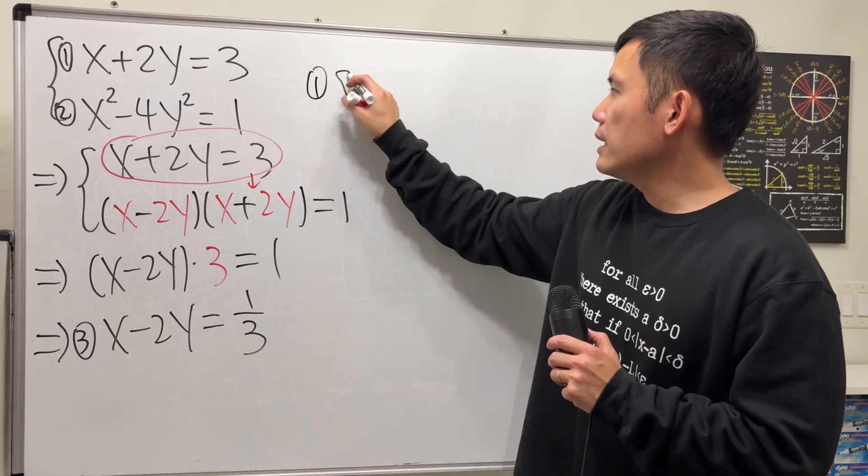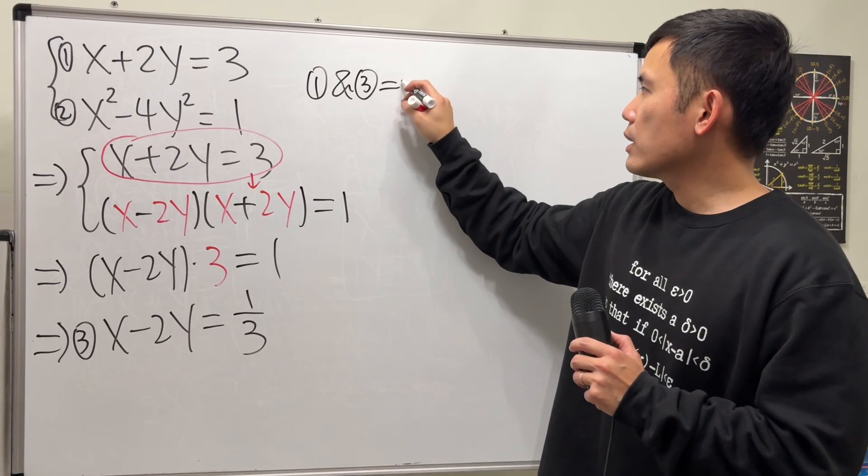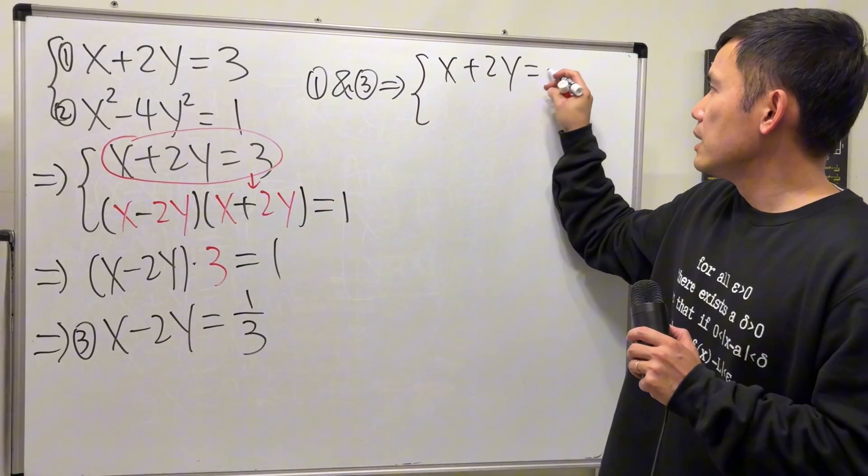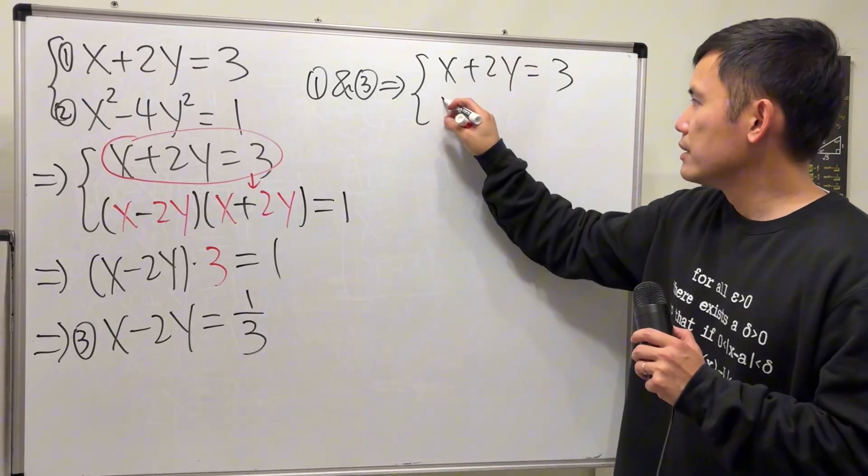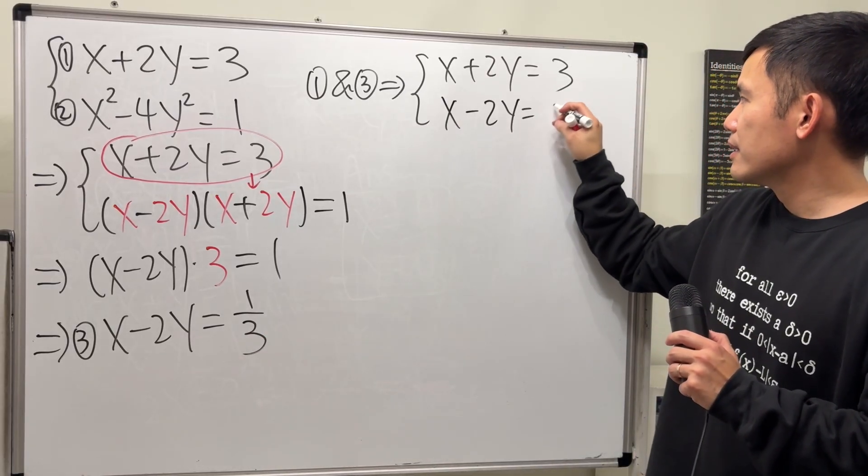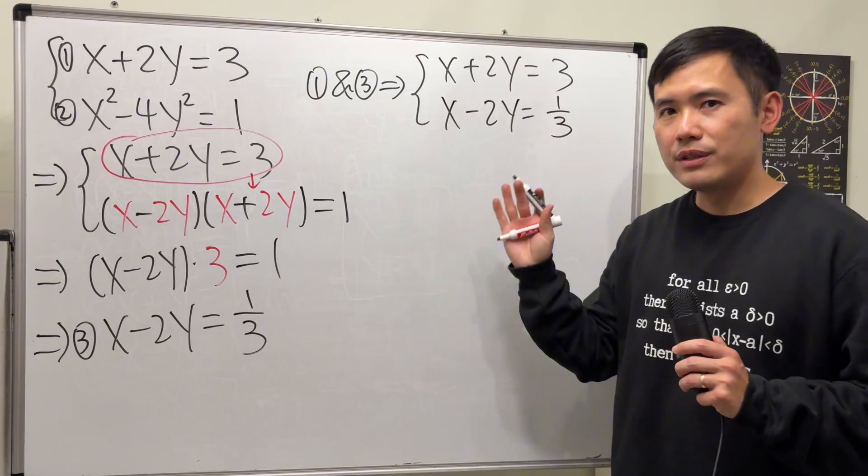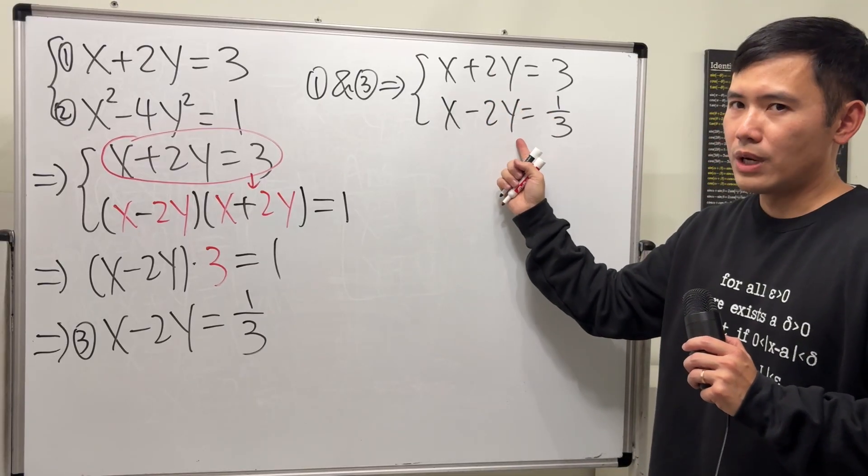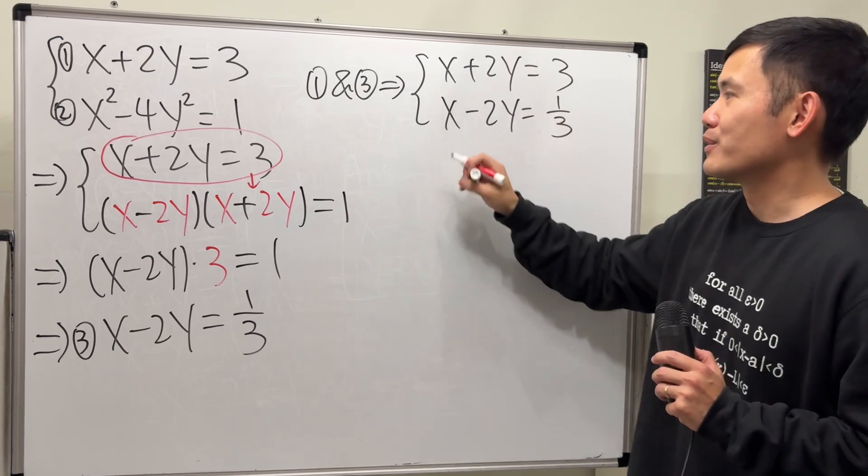Combining equation 1 and 3, we are going to get the first one stays the same, and then the third one is right there. And now this is much better because we have 2y here and then minus 2y. So if we add the equations, they will be gone, right?